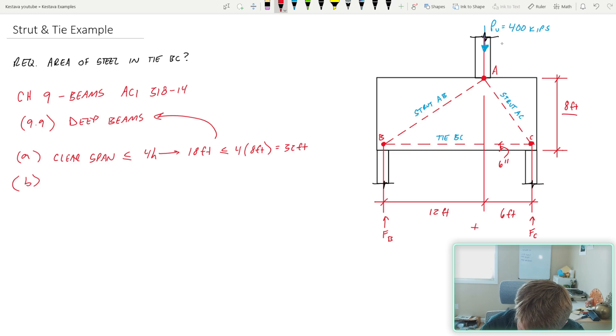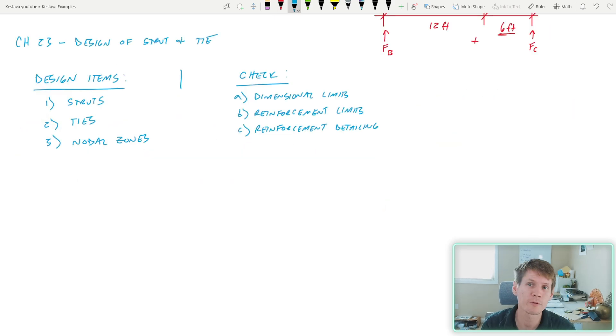So we satisfy that first option stating that we can indeed proceed forward as a deep beam design. Option B is all about locating the distance from your reaction PU over to one of your piles, six feet. And that needs to be less than or equal to two times the depth of your member. So two times H is 16 feet. So we absolutely fall under both of those requirements. You don't need to satisfy both just one or the other, but we're just going to go through both of them here today.